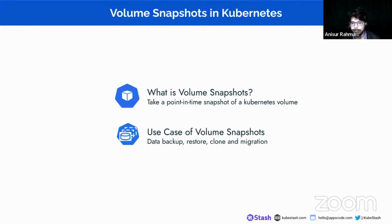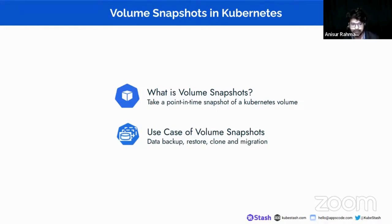In the PVC YAML configuration, under the data source reference, we can provide a namespace, a volume snapshot namespace, and a name. That means we can restore a volume to a prior state or provision a new volume using volume snapshots. We can also migrate our volume into a different cluster or into a different storage system.